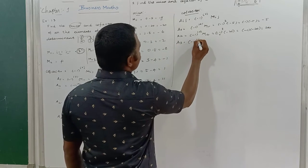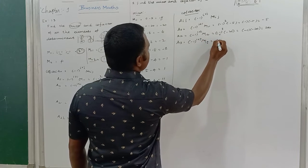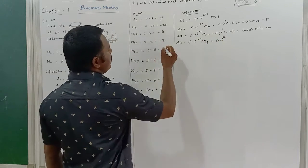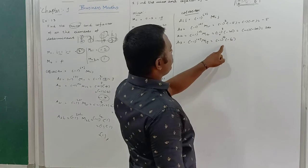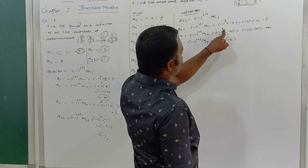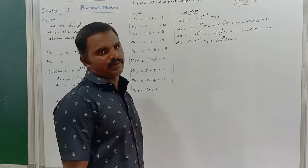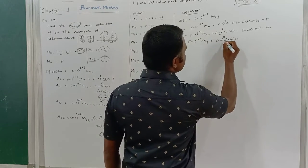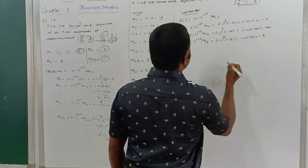A13 = (-1)^(1+3) × M13 = (-1)^4 × (minus 6). Since the power is even, it converts to positive 1, so plus 1 × minus 6 = minus 6.